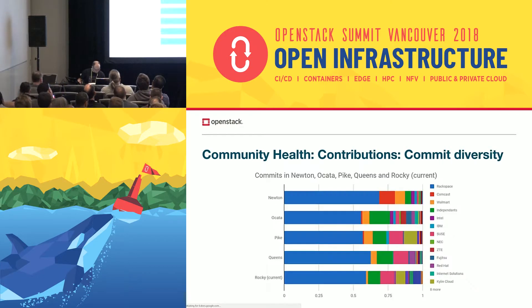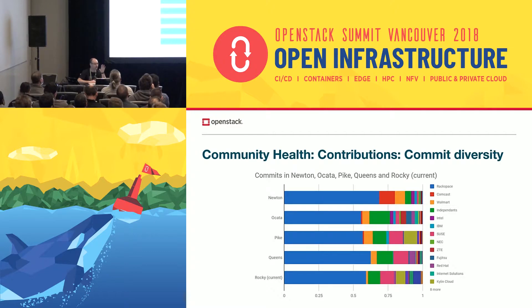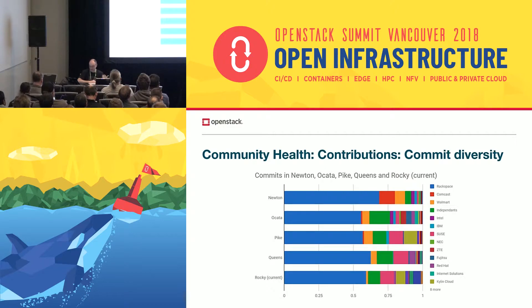For this slide, I took from Stackalytics the first eight company contributors per cycle and put that into a large table. What you can see is that there are 21 different companies that made it into the top eight. Companies come and go, with the width and color of the bar changing. For commits, Rackspace is still the main contributor, not changing much over the last cycle, but any company can help so that we can reach more diversity.